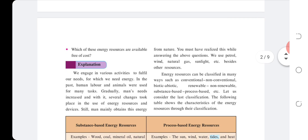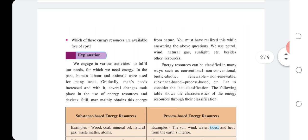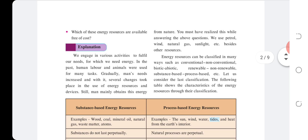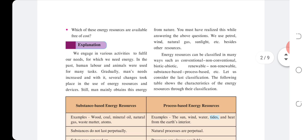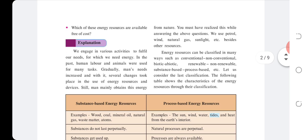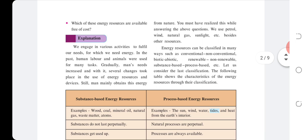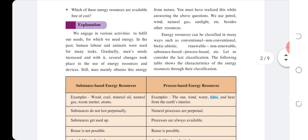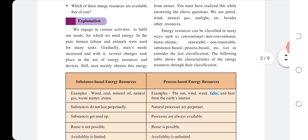We use petrol, wind, natural gas, sunlight, and other resources. Energy resources can be classified in many ways, such as conventional, non-conventional, biotic, abiotic, renewable, non-renewable, substance-based, process-based, etc.